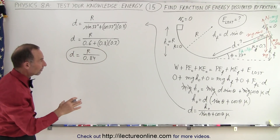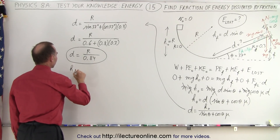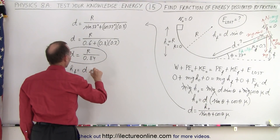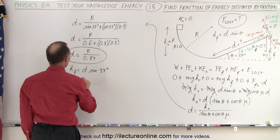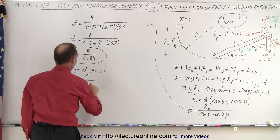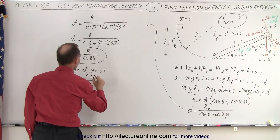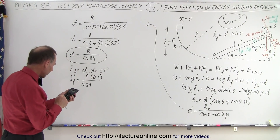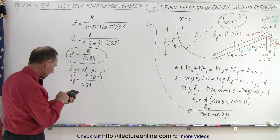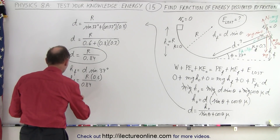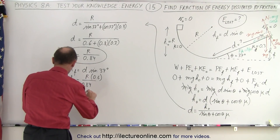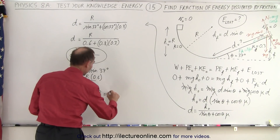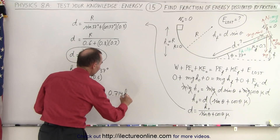From that we can figure out the final height. h_final equals d times sin(θ), which is d times sin(37°). So this equals r divided by 0.84 multiplied by sin(37°), which is 0.6. Calculating that: 0.6 divided by 0.84 gives us h_final equals 0.714 times the radius, which means h_final equals 0.714 times h_initial.